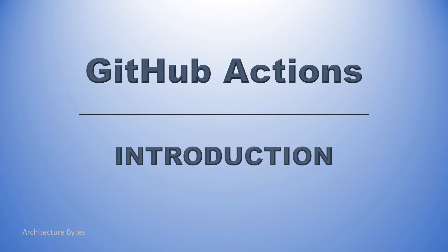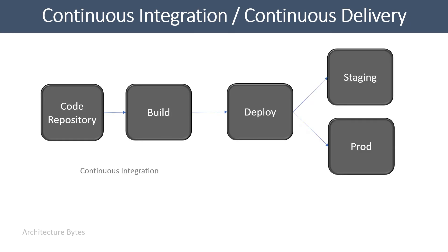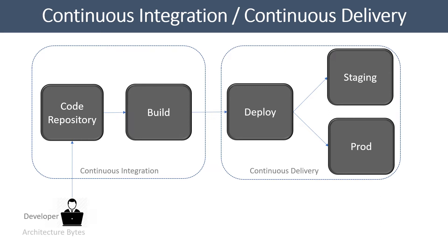Introduction to GitHub Actions. What is CI/CD? It is automation of building, testing, and deployment of your applications — in other words, automating your release process. As you can see in the diagram, the primary components of such a process are a code repository, building, deploying, and your deployment targets.